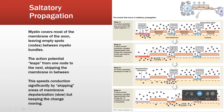As soon as the voltage-gated channels open, we get the rush in of sodium and here we are at plus 30 — and then the same thing happens at the next area. This dramatically speeds up the conduction of the action potential from one part of the cell down the axon to the other.